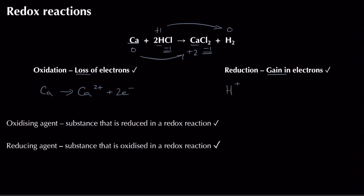For the reduction half equation: in HCl we have H⁺, and that H⁺ is going to gain an electron to form hydrogen gas. We need to balance this, so we need two lots of H⁺ ions and two lots of electrons. That gives us two balanced half equations altogether.